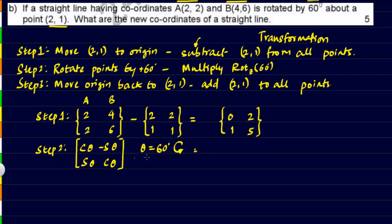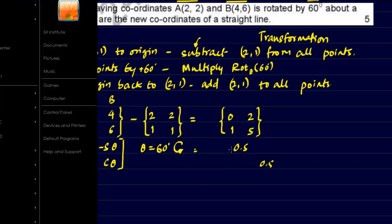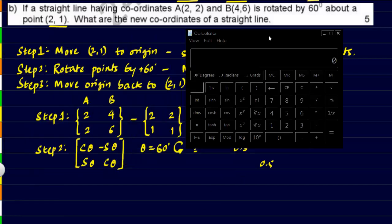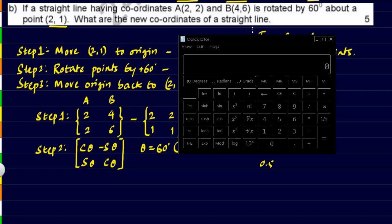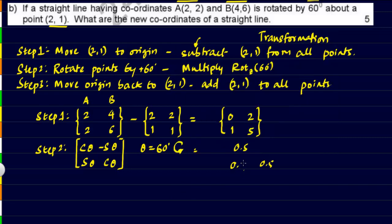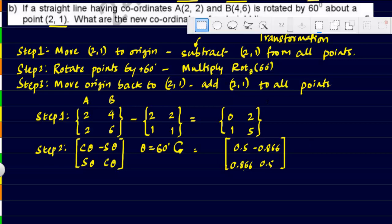Let's compute the matrix values. cos 60 gives us 0.5, so 0.5 appears in both diagonal positions. Using a calculator, sin 60 gives 0.866, so 0.866 appears in the off-diagonal positions — but it's negative in the top-right. This is our rotation matrix, which we'll multiply with the translated points.